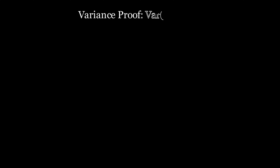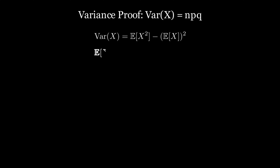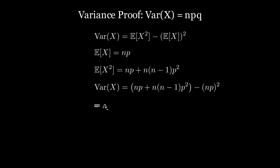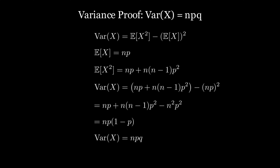For the mathematical proof of variance, we start by writing variance as E[X²] − (E[X])², and after a few manipulations we arrive at variance equal to n·p·q.